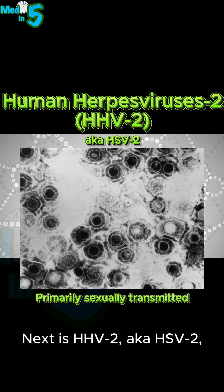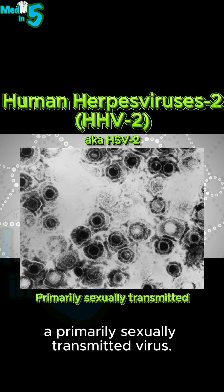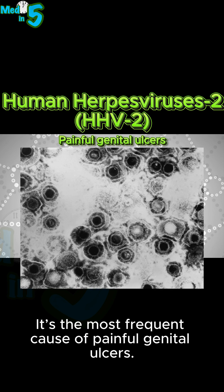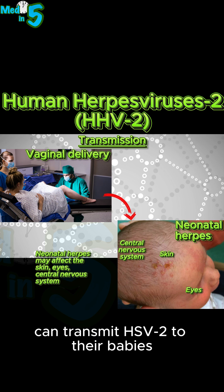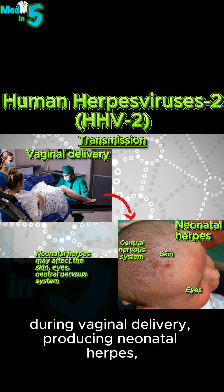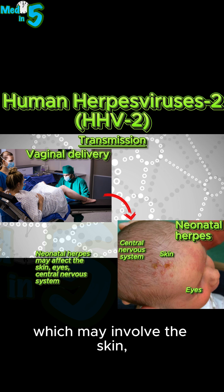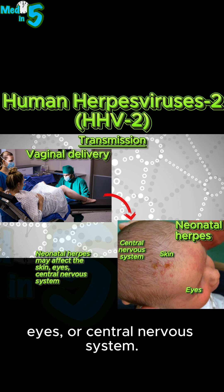Next is HHV-2, also known as HSV-2, a primarily sexually transmitted virus. It's the most frequent cause of painful genital ulcers. Mothers with genital lesions can transmit HSV-2 to their babies during vaginal delivery, producing neonatal herpes, which may involve the skin, eyes, or central nervous system.